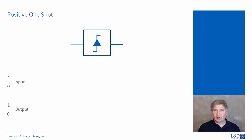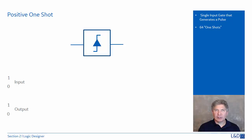A one-shot refers to a single-pulse gate that generates a pulse in response to an edge on the input. The symbol here is for a positive one-shot. There are a maximum of 64 one-shots. A positive one-shot symbol responds to a positive going edge in the logic designer diagram.